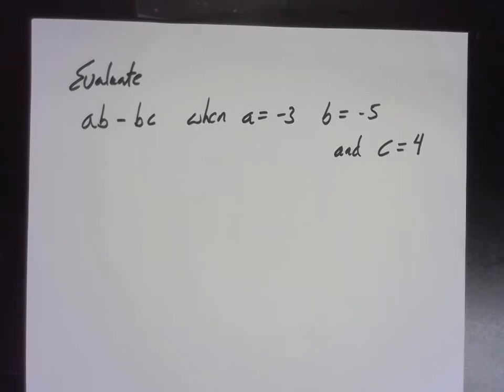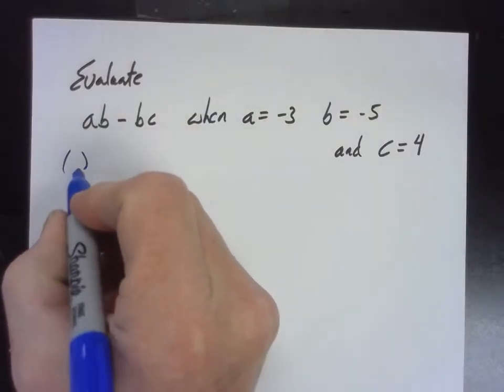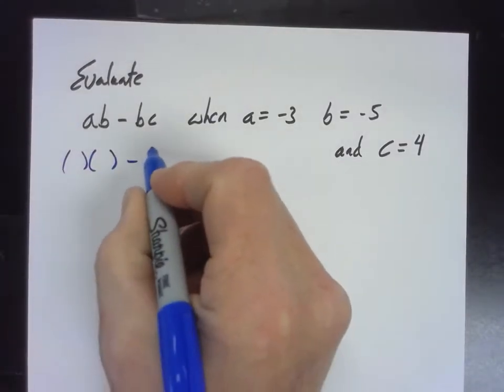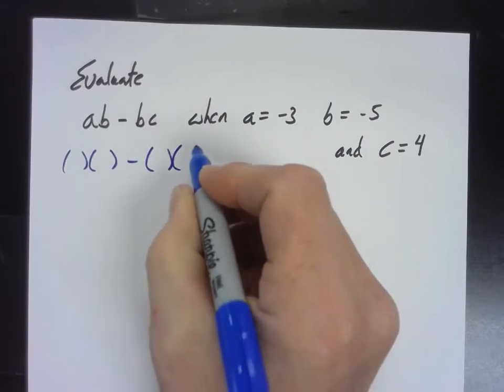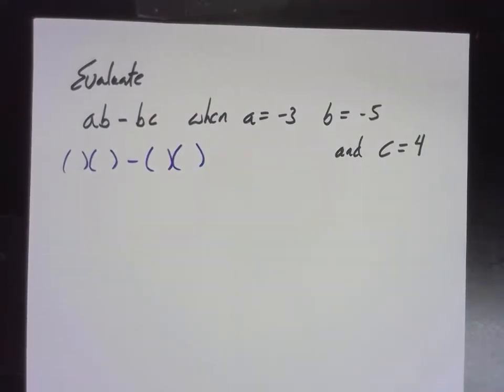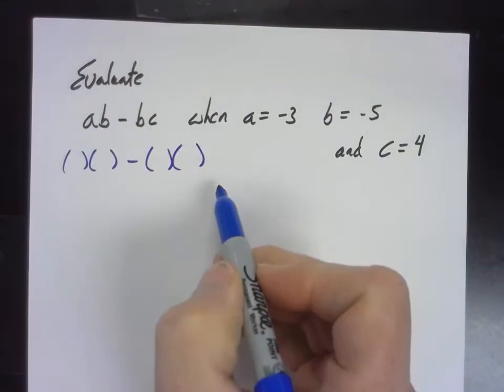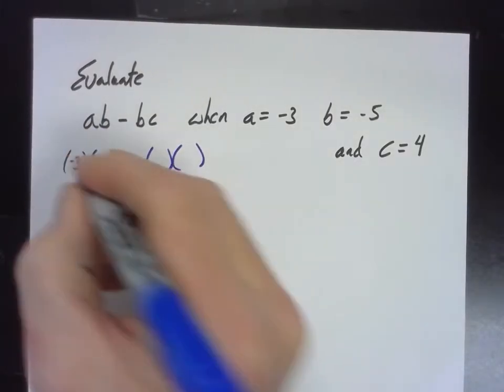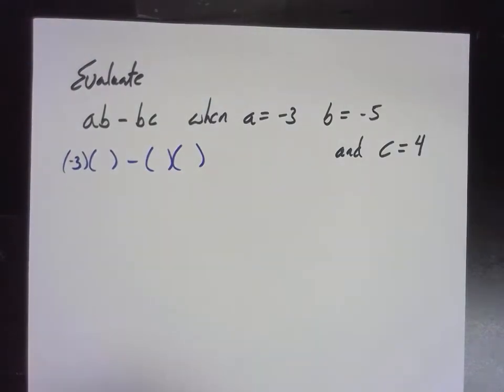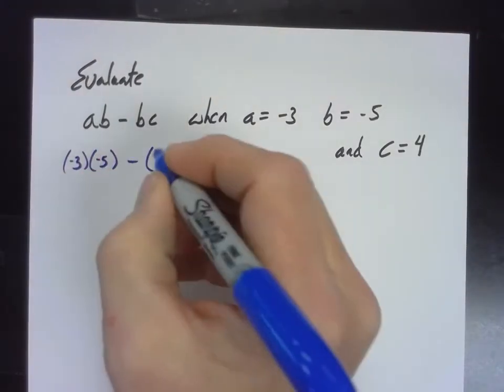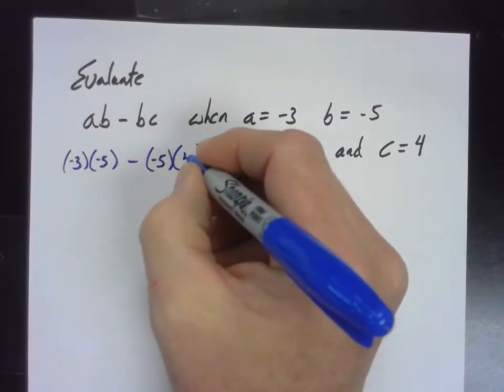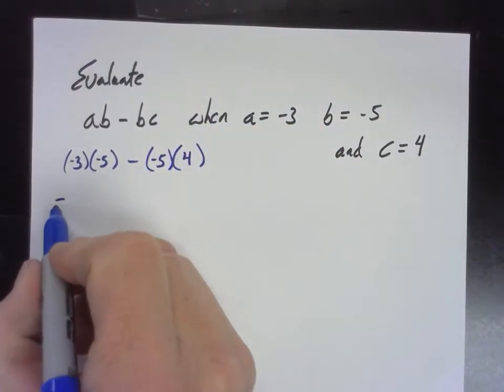Would you guys ask me, is it 35? I don't know what the answer is. I just made up a random problem and we'll see what we get. So my biggest concern is not necessarily the answer, but you're doing the work the way I've asked you to. So you're replacing each variable with a parenthesis, plugging in the values, negative 3 for a, negative 5 for b, and then 4 for c, and then you're doing the problem.